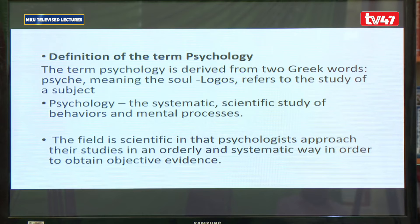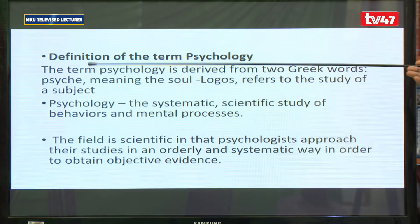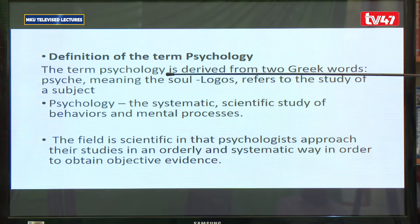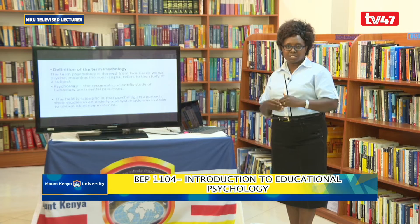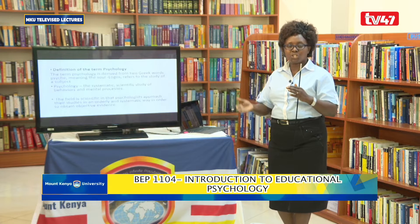We start by defining the term psychology. The term is derived from two Greek words. The first is 'psyche,' which in the olden days meant the soul — so it was a study of the soul. The second is 'logos,' a Greek word which refers to the study of something, a subject. So in the very early days, during the time of the Greek philosophers, they understood psychology to be the study of the soul, and it was studied as a branch of philosophy.